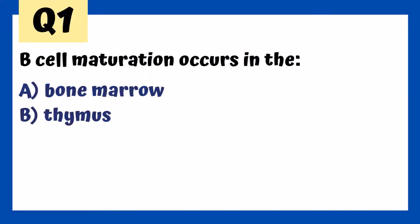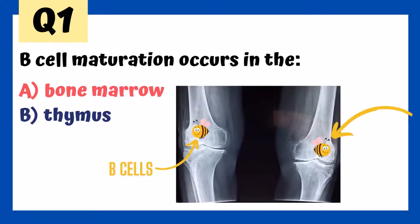B-cell maturation occurs in the bone marrow — that's actually why they're called B-cells, not a mnemonic. That's really why they're called B-cells, because they mature in the bone marrow. As opposed to T-cells, which are called T-cells because they mature in the thymus. They originate in the bone marrow, but they end up in the thymus. B-cells mature in the bone marrow.